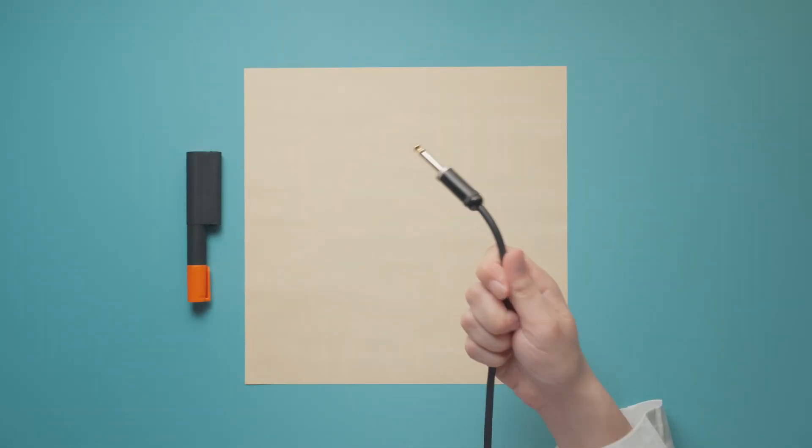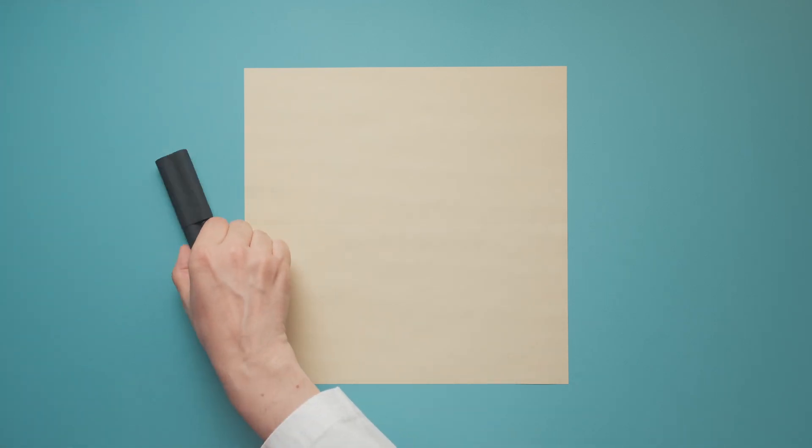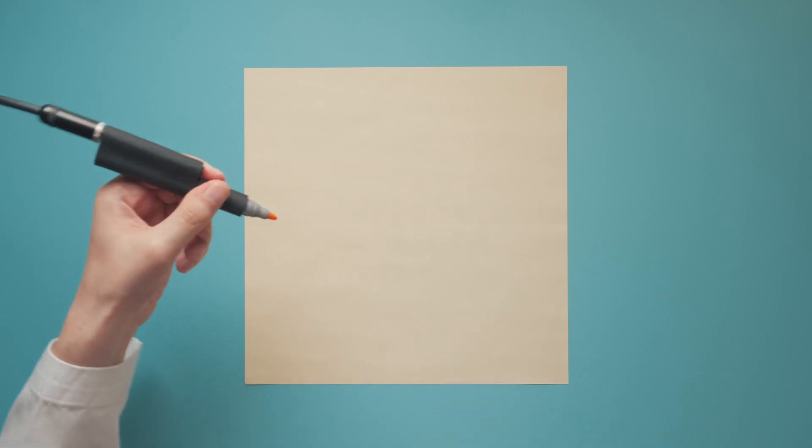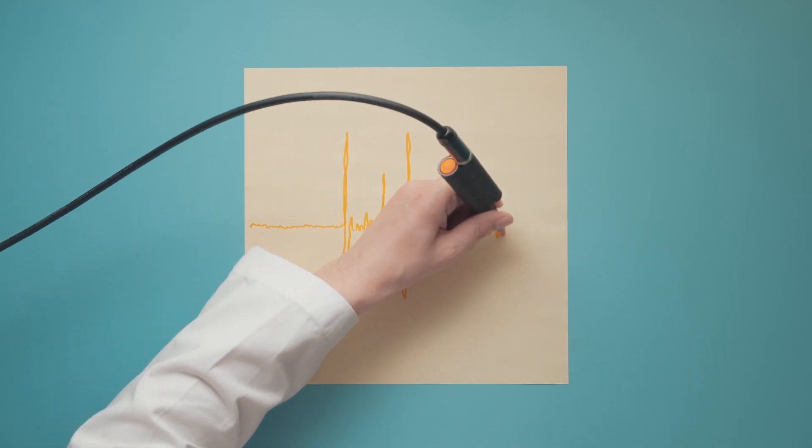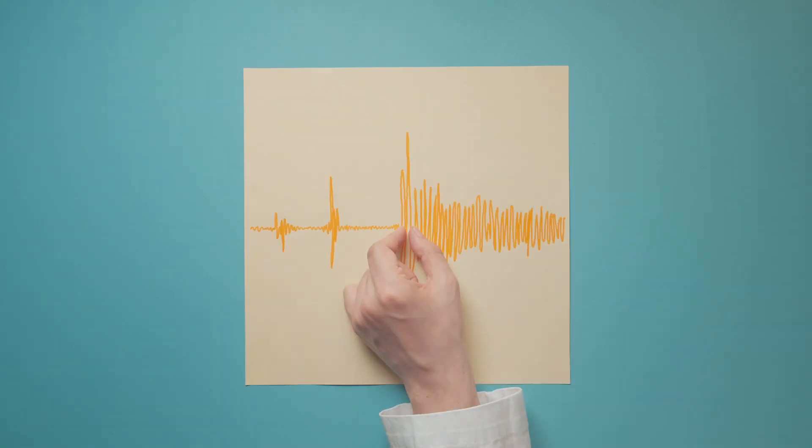First, let's get ourselves an analog signal. Let's zoom in so we can take a better look at the signal.